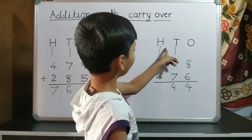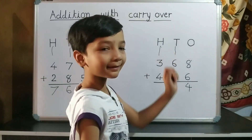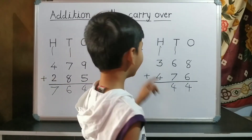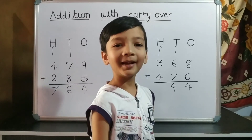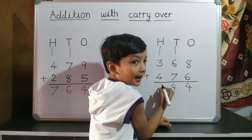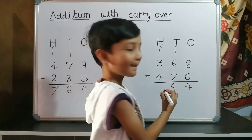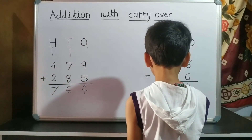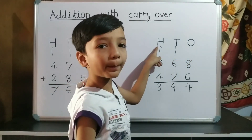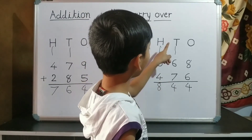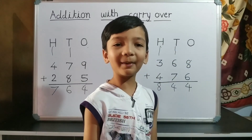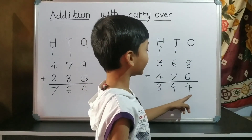Now we do addition of hundred's place. 1 plus 3 is 4. 4 plus 4 is 8. So we write 8 on hundred's place. 8 is on hundred's place, 4 is on ten's place, and 4 is on one's place. So our answer is 844.